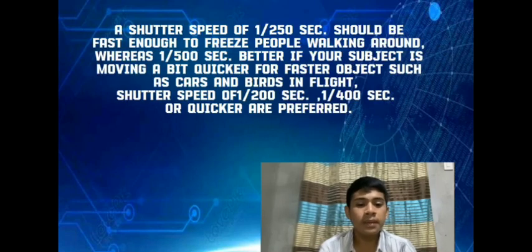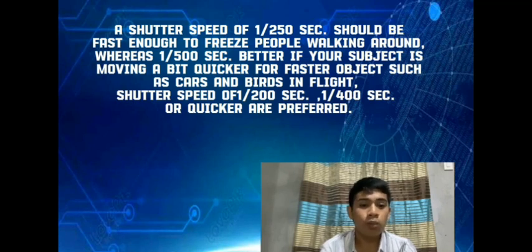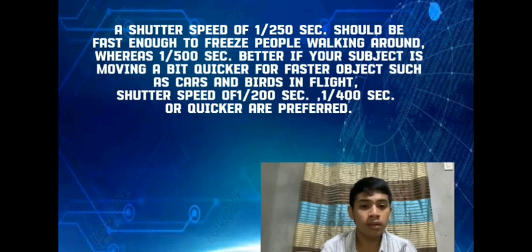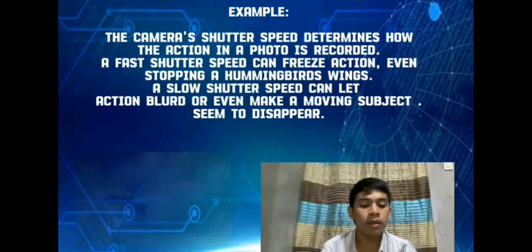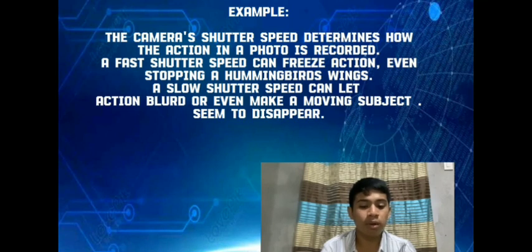For motion capture, a shutter speed of 1/250 seconds should be fast enough to freeze people walking around, whereas 1/500 seconds is better if your subject is moving a bit quicker. For faster objects such as cars and birds in flight, shutter speeds of 1/200 to 1/400 seconds are preferred. A fast shutter speed can freeze action, even stopping a bird's wing mid-flap, while a slow shutter speed can let action blur or even make a moving subject seem to disappear.